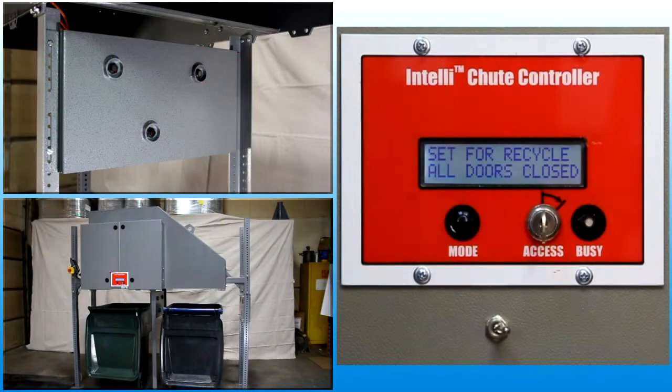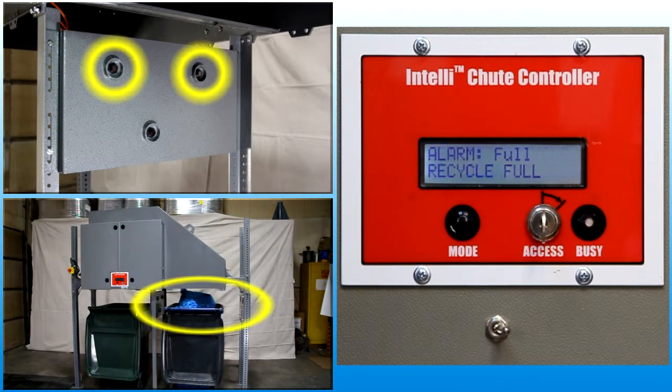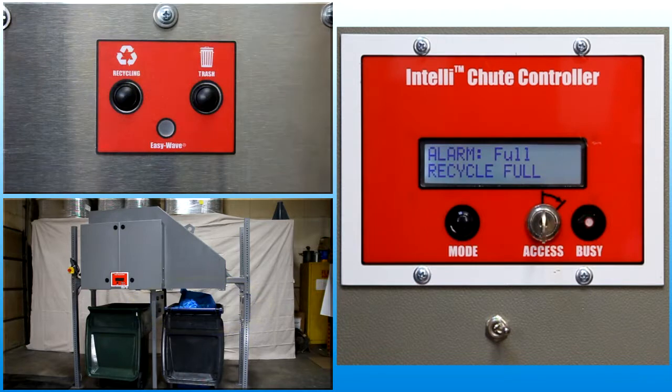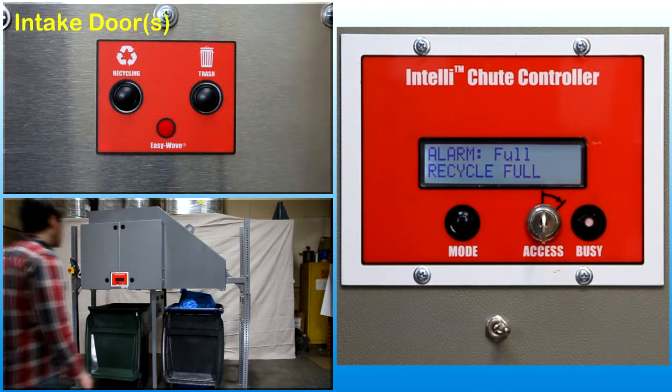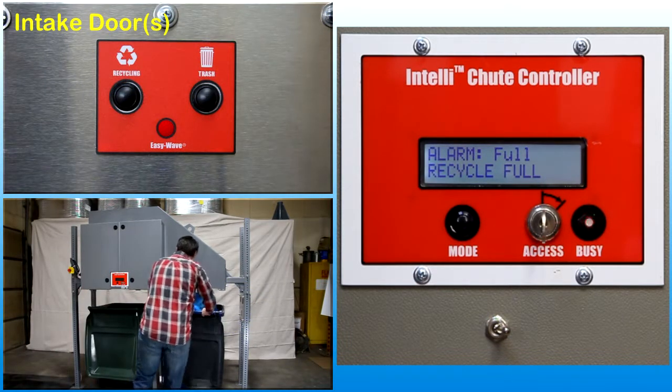By default, the control system will generate a cart full warning message and lock out the chute system until maintenance personnel replace the full container.